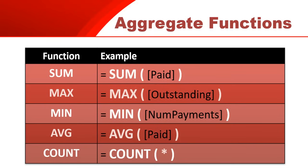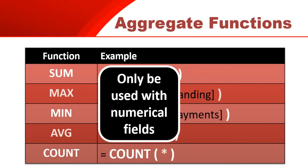Take a look at those first four functions — Sum, Max, Min, and Average. Those can only be used with numerical fields, or fields that have numbers or currencies. Which makes sense: you can't find the average of a surname or find the biggest name. But you can find the average amount paid, the sum of all outstanding amounts — anything to do with currency or numerical values. You can use those first four for that.